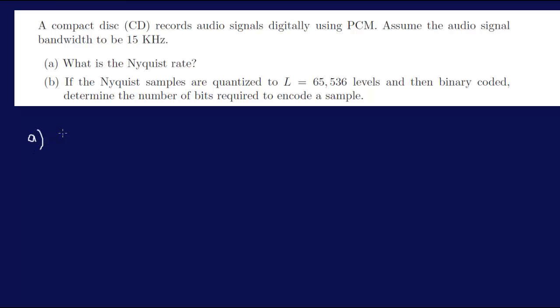So the first question here is to find the Nyquist rate, so that's the frequency, and we have the bandwidth. Therefore the frequency is bandwidth times 2, and that's 15,000 times 2, and that gives you 30,000.